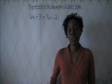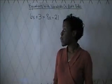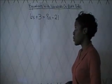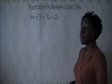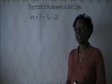Today we're going to discuss how to solve equations with variables on both sides. In the example you see here, we have 6x plus 3 is equal to 8x minus 21. You notice that x is on both sides of the equal sign.